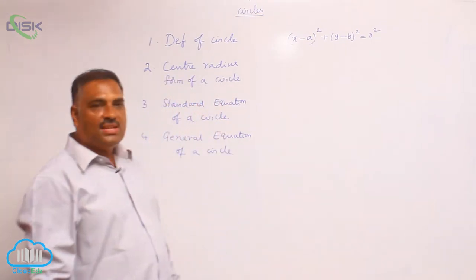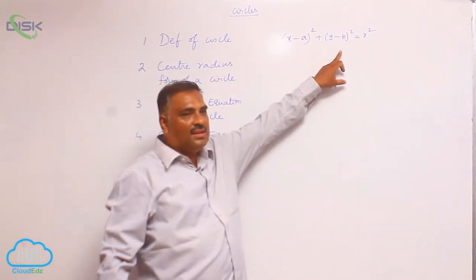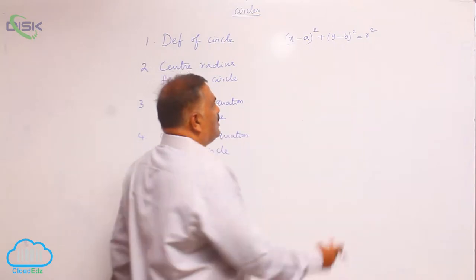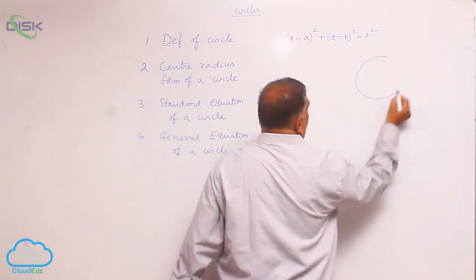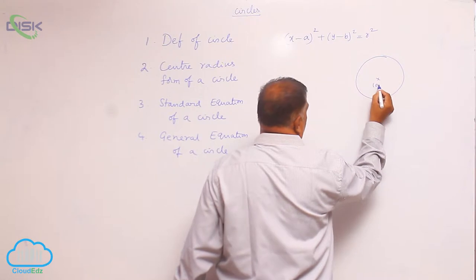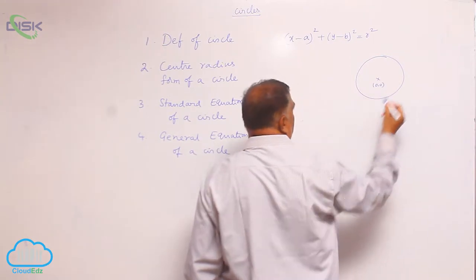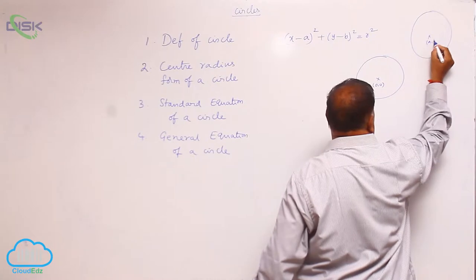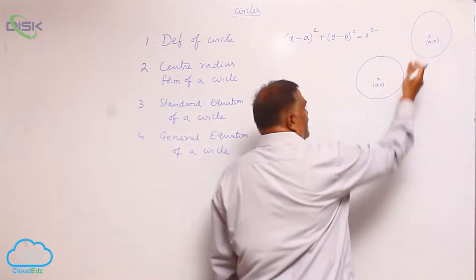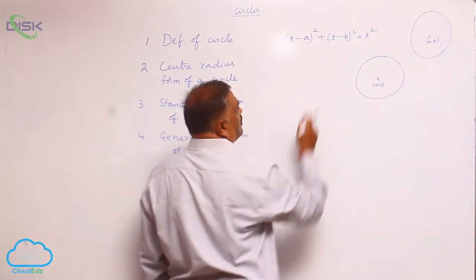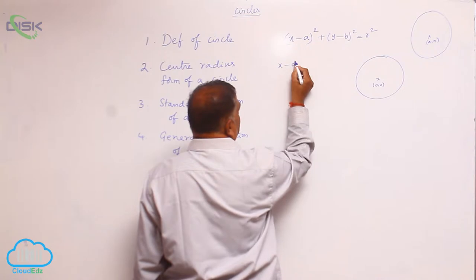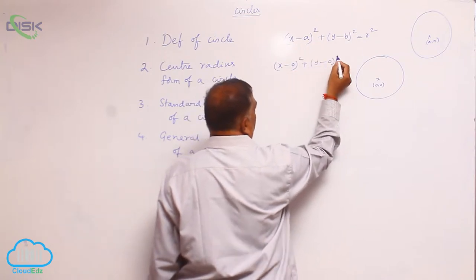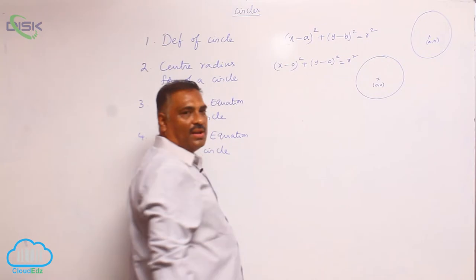Here, we see that (a, b) is the center and r is the radius. Now, if the origin is the center — that means previously the circle had center (a, b) — the center is shifted back to (0, 0). Then it becomes: x minus 0, whole square, plus y minus 0, whole square, equal to r square.